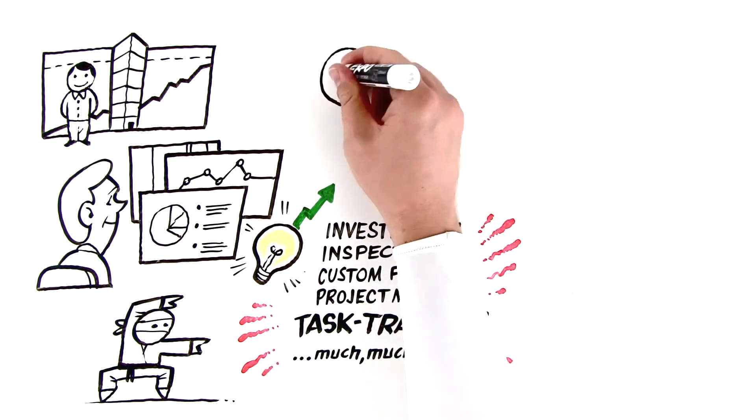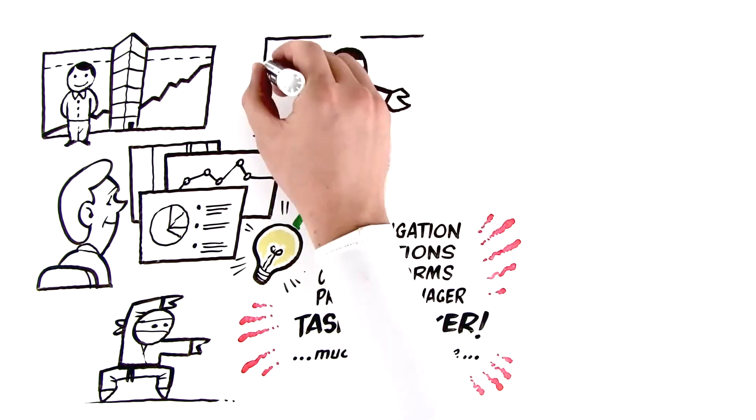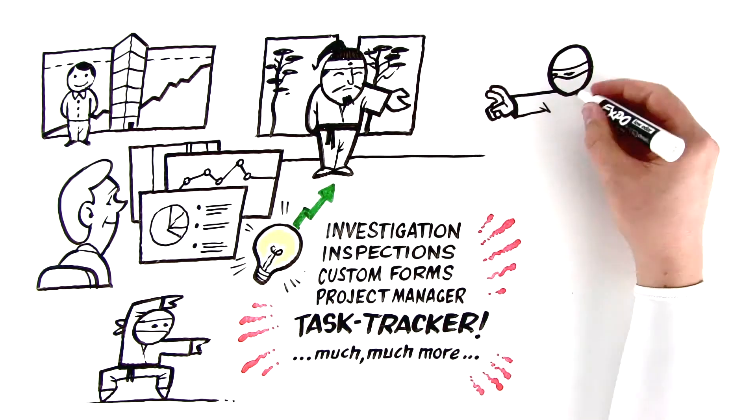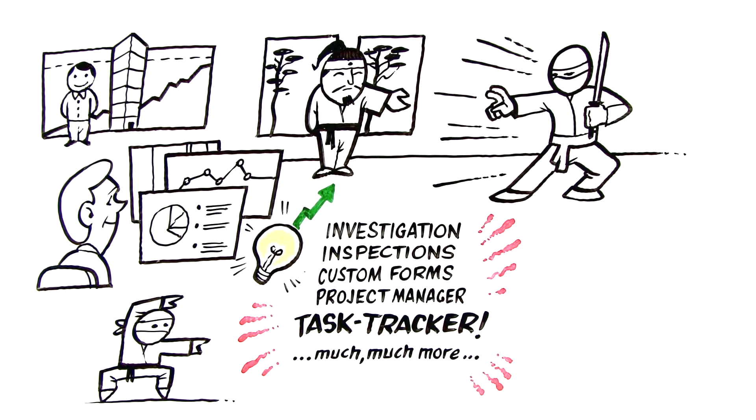Oh, and did we mention our dojo? See, we only aim for the best here. The most efficient, the most capable. And you know who really gets things done? Ninjas do. Especially once they've earned their green, orange, and black belts.